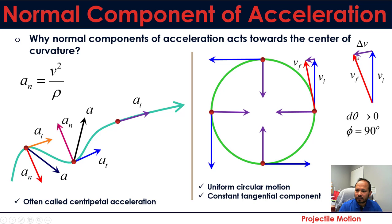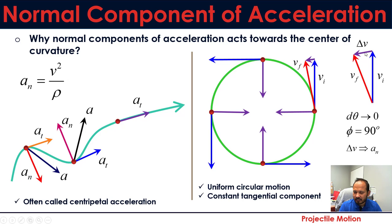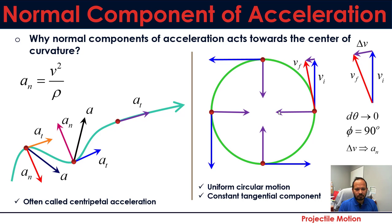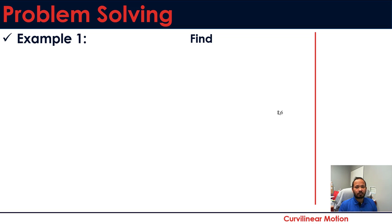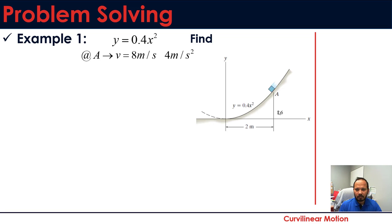So the change in velocity — which represents the normal acceleration component — is perpendicular to the tangent and directed toward the center of curvature. This is why the normal component of acceleration always acts toward the center. That covers two different ways to understand why the normal acceleration points toward the center of curvature.